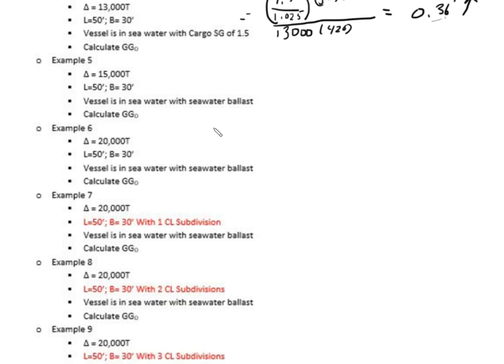Now, what we're going to do is, we were changing specific gravity. You'll see now that we're going to be in seawater with seawater ballast the entire time. So R is going to be 1 for all these problems. And now, we're going to start to change the displacement. So, let's do this problem now. We've got 1.025 divided by 1.025, which becomes 1 times 50 times 30 cubed divided by 15,000 times 420. And when we do that one, we should get a GGO of 0.21 feet.